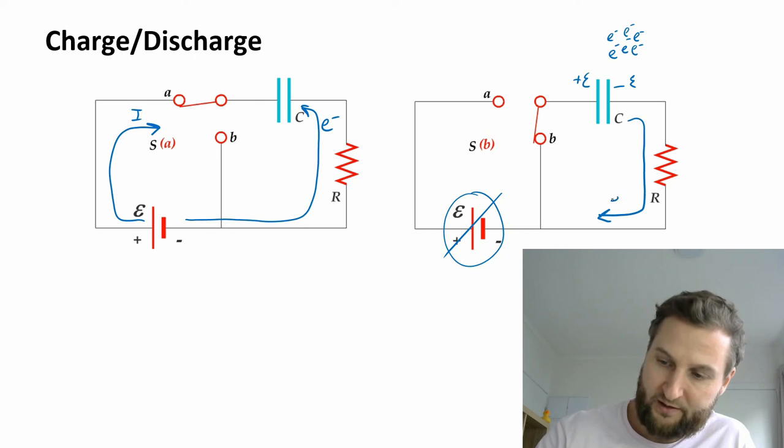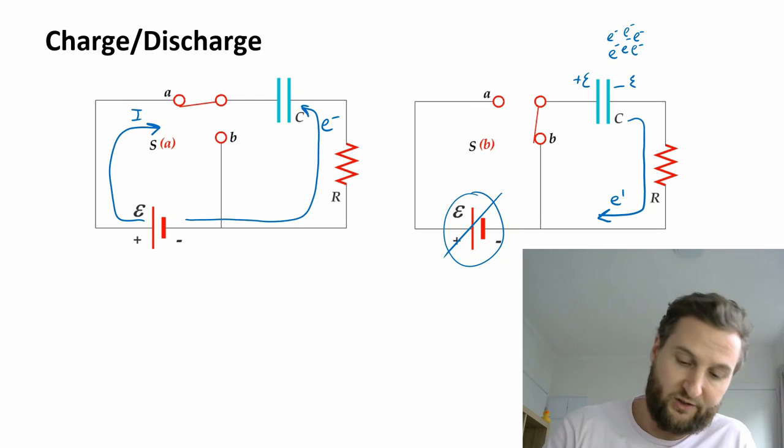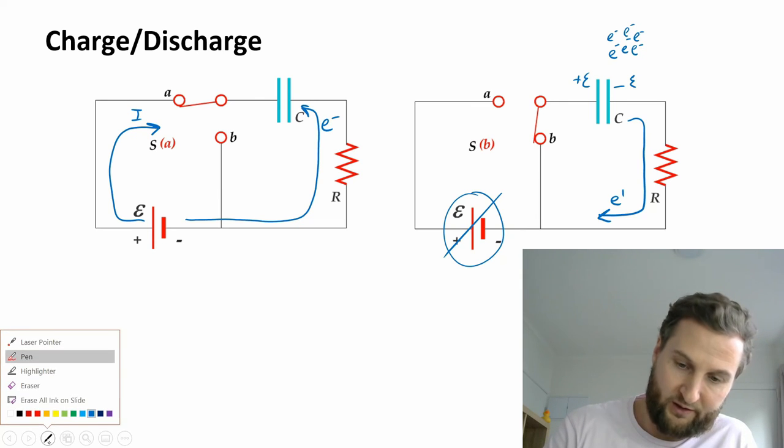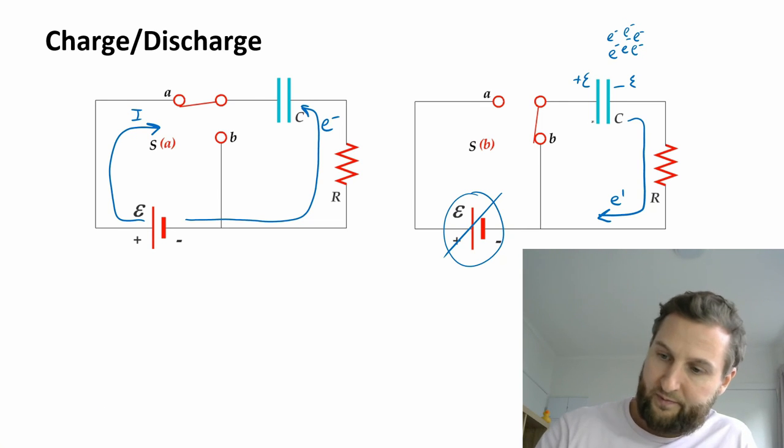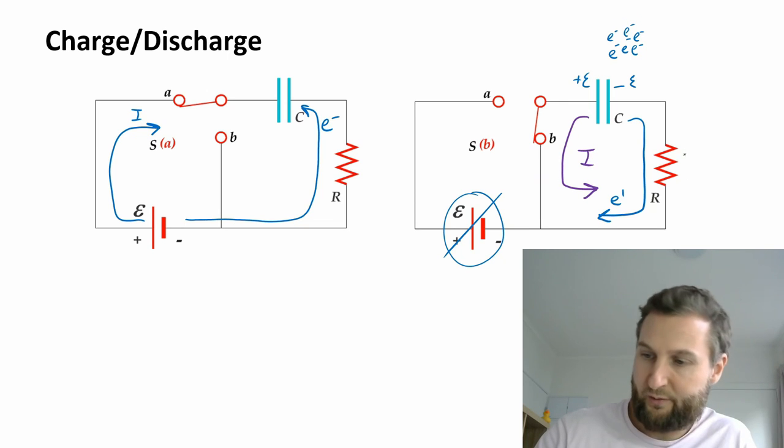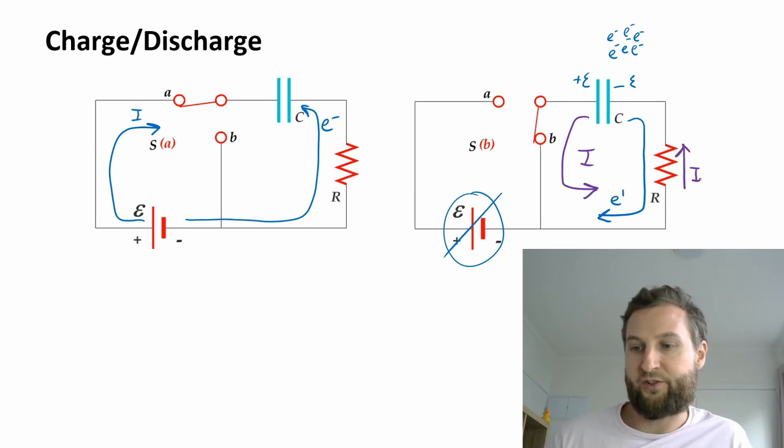Electrons are going to come this way, and that means that current, which is the direction we're used to following, is going to come in this direction. So current will come across R in the up direction, and electrons will be drifting down.